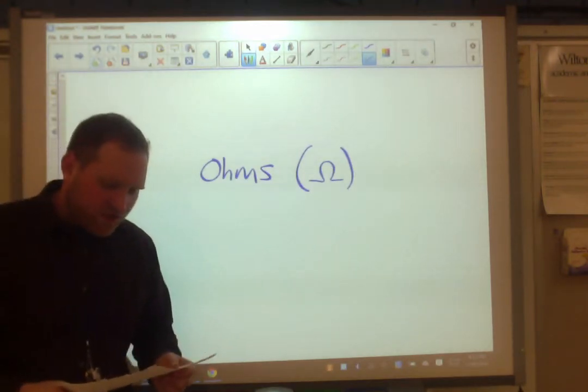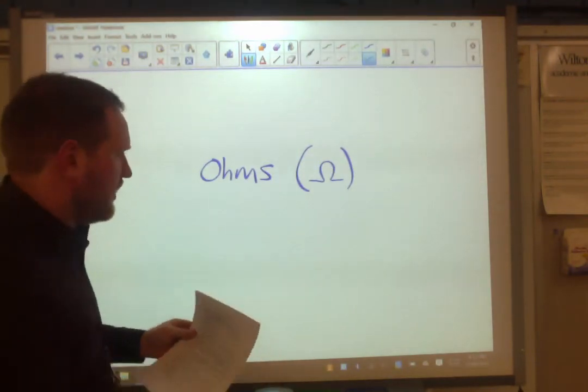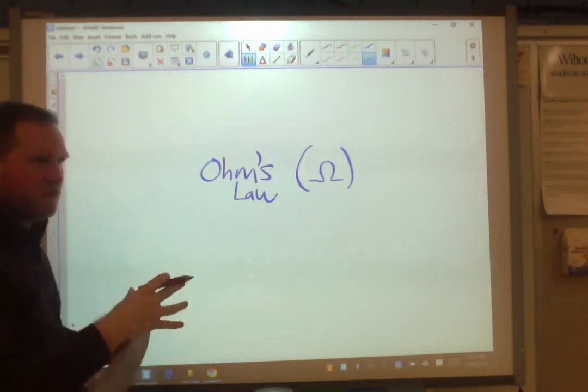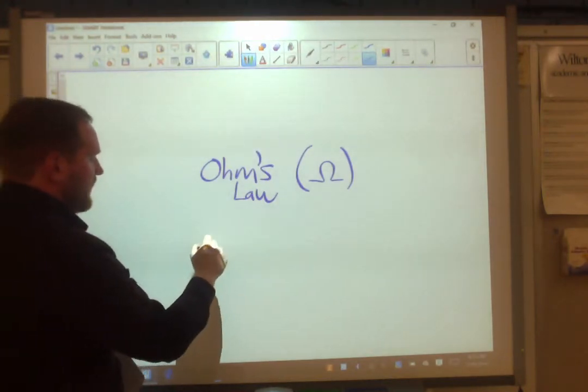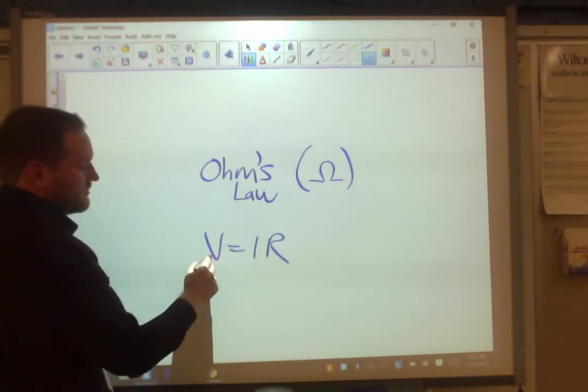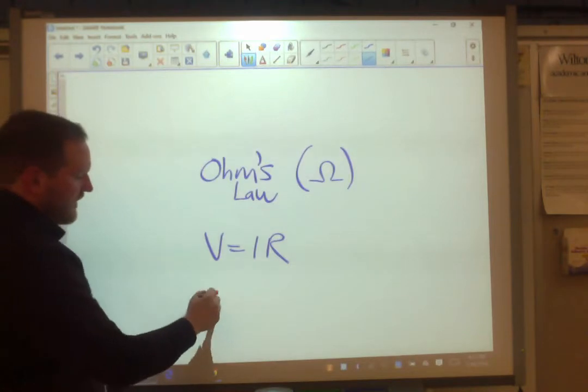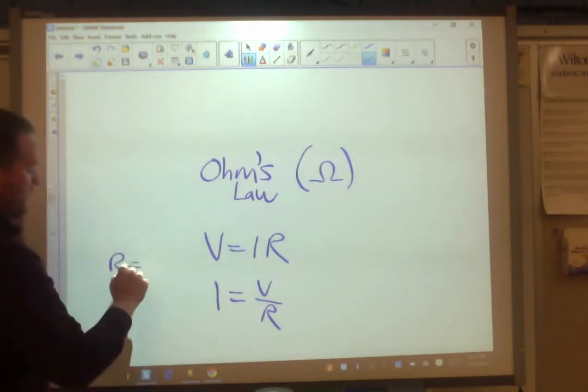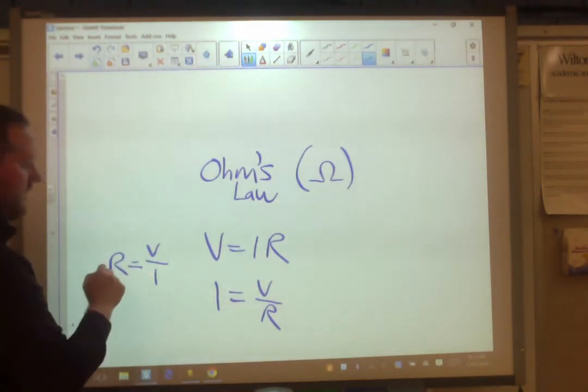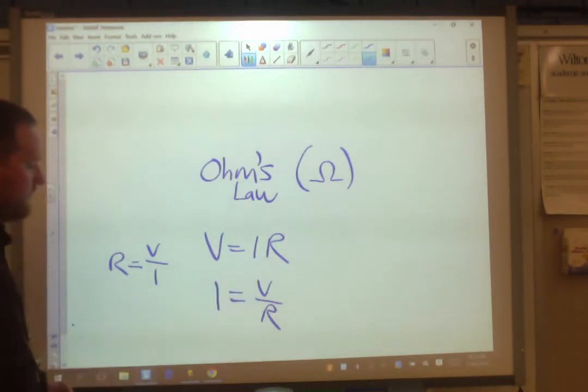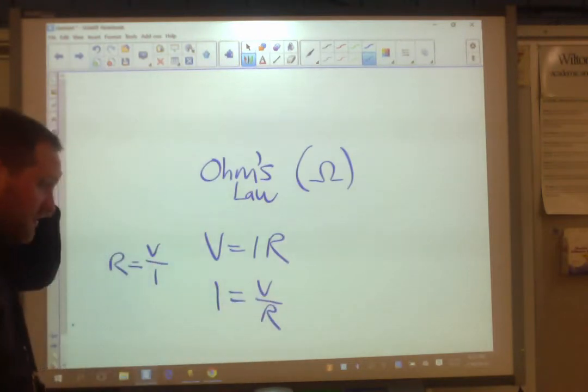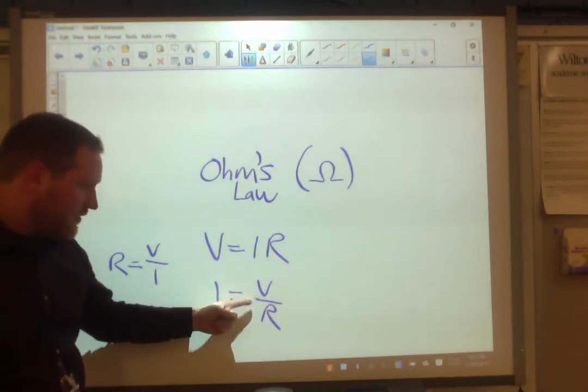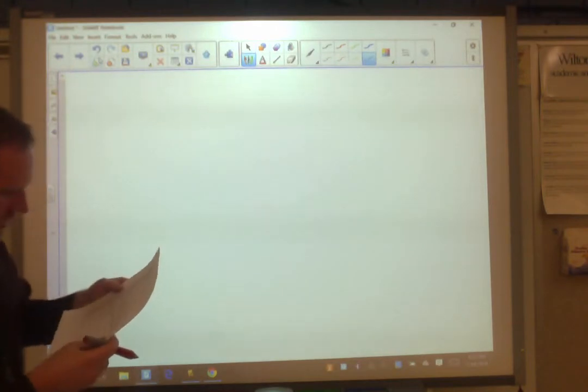12, how are voltage, resistance, and current related? In other words, what's the formula? It's Ohm's law. There are three ways of representing it. Commonly, it's called V equals IR, which means voltage equals current times resistance. I prefer to write it as current equals voltage over resistance. The third way, you could put R by itself, R equals V over I. I like this one the best because it makes sense. The more voltage, the more current. The more resistance, the less current.